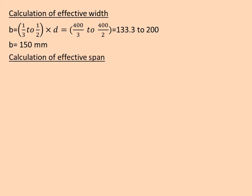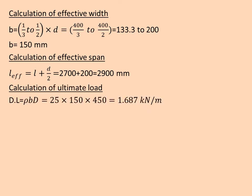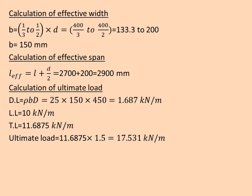After that we calculate effective span. For cantilever beams, L effective is equal to L plus D/2, that is 2700 plus 200, which is equal to 2900mm. Now calculation of ultimate load. Dead load BD is equal to 25 into 150 into 450, which is equal to 1.687 kN/m. Live load 10 kN/m. Hence we get the total load as 11.6875 kN/m. Ultimate load is equal to total load into factor of safety 1.5, and we get 17.531 kN/m.